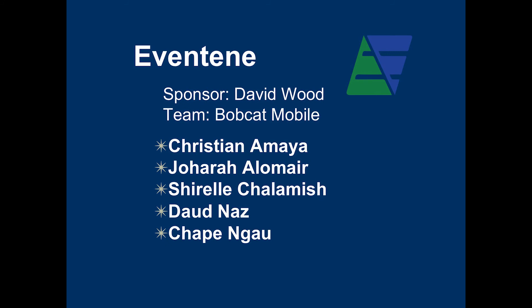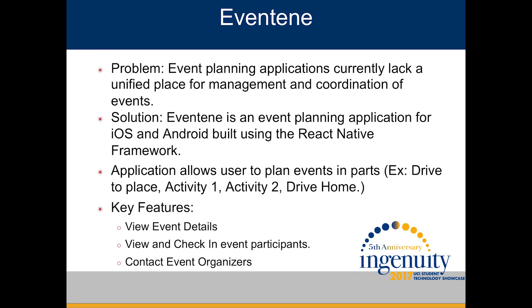My name is Jahara, and I'll be representing Team Bobcat Mobile. I'd like to say thank you to our project sponsor David Wood and our advisor Hadar Zip. In today's world, many organizations are expected to plan complex events that require many components and many volunteers to achieve their business goals. Evantine is an event planning application that uses intuitive design to transform these complex events into easily manageable components. Over the course of two quarters, our team worked tirelessly to simplify event planning so that every detail is easily captured, encapsulated, and accessible in a functional mobile application.